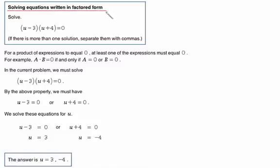We'll look at solving equations written in factored form. The directions say solve, and we see this is a factored quadratic set equal to zero. Notice the instructions: if there's more than one solution, separate them with commas. How do we go about doing this?